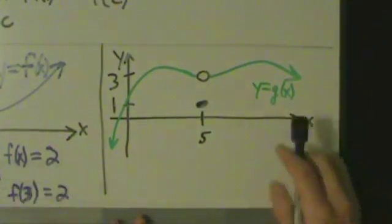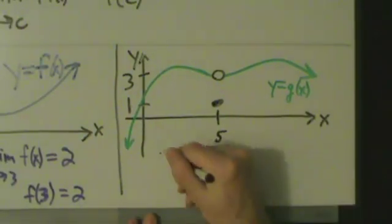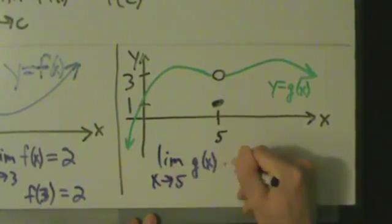Now we have this function y equals g(x), and let's take a look at what happens around 5. So what's the limit as x approaches 5 of g(x)?